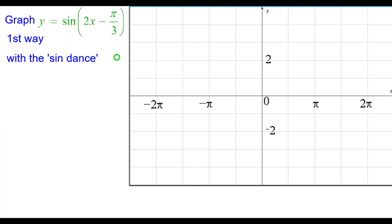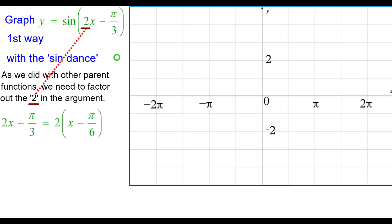The first way is with what we call the sine dance. And as we did with other parent functions, we need to factor out the 2 in the argument. So 2x minus pi over 3 could be rewritten as 2 times the quantity x minus pi over 6. These are equivalent expressions.